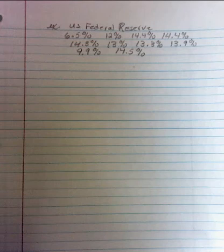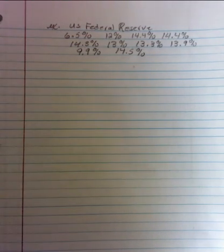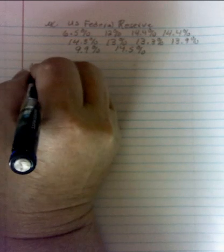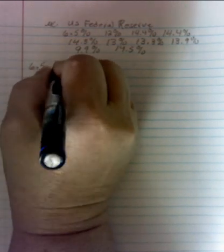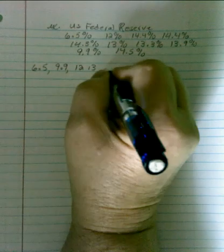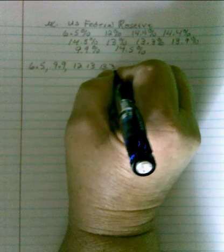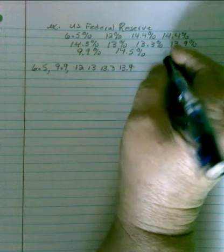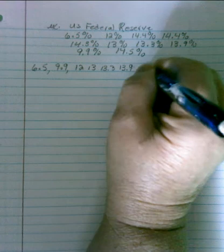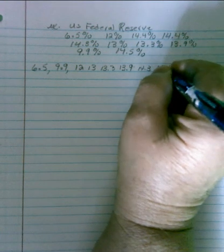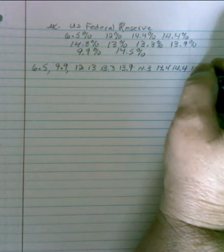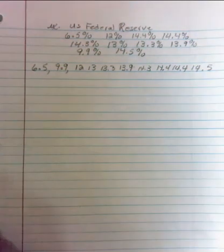Now again, the first thing you would need to do is to arrange your data in order from smallest to largest. So we have 6.5 percent, 9.9 percent, 12 percent, 13 percent, 13.3 percent, 13.9 percent, 14.3 percent, 14.4 percent, 14.4 percent, and 14.5 percent. So we've arranged our data.